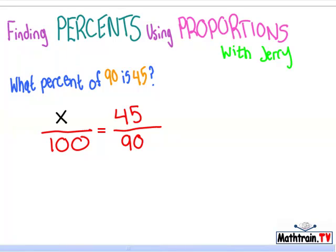So, 90 times x, and then 100 times 45, which is 4,500.